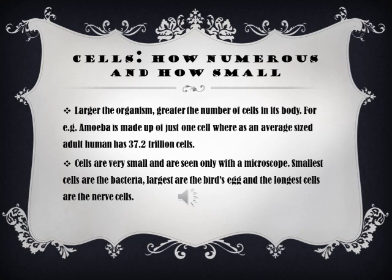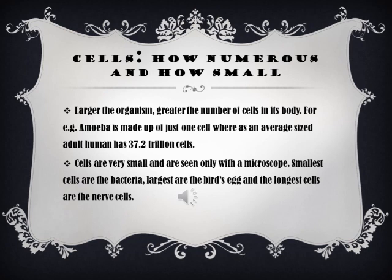Cells are very small and are seen only with the microscope. The smallest cells are bacteria, but to be precise, the smallest is mycoplasma (M-Y-C-O-P-L-A-S-M-A), which is even smaller than bacteria — it is between the virus and the bacteria, with a size of nearly 0.1 mu. The largest cells are bird's eggs, and the largest among those is the ostrich's egg. The longest cells are the nerve cells, which are a composite part of the nervous system in all living organisms.